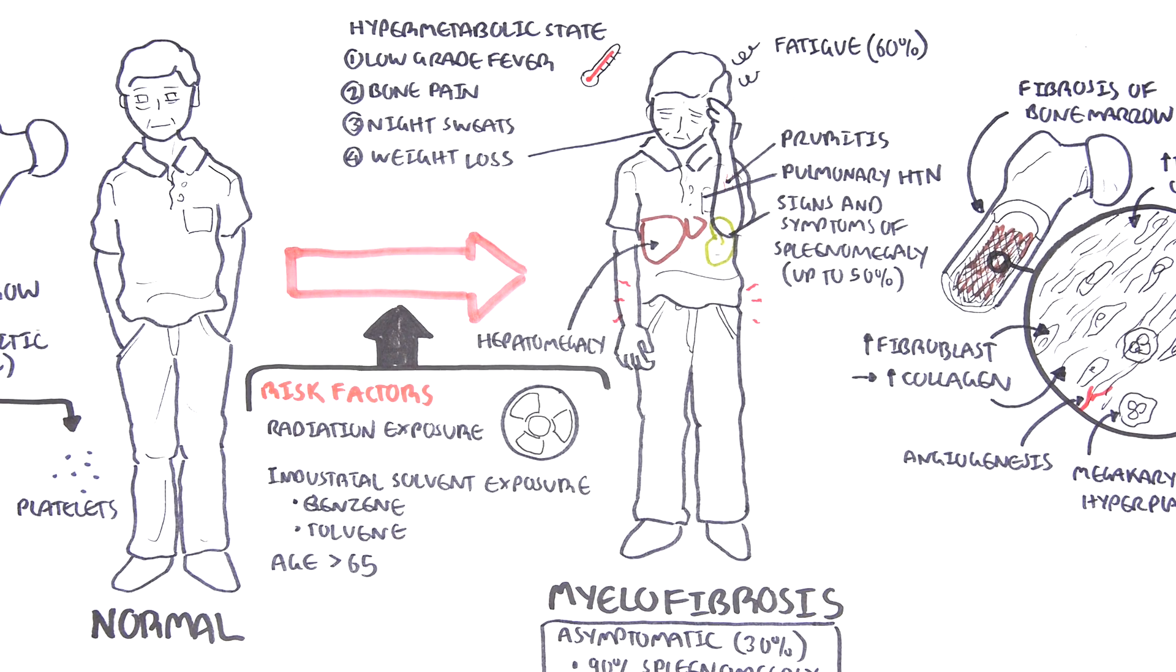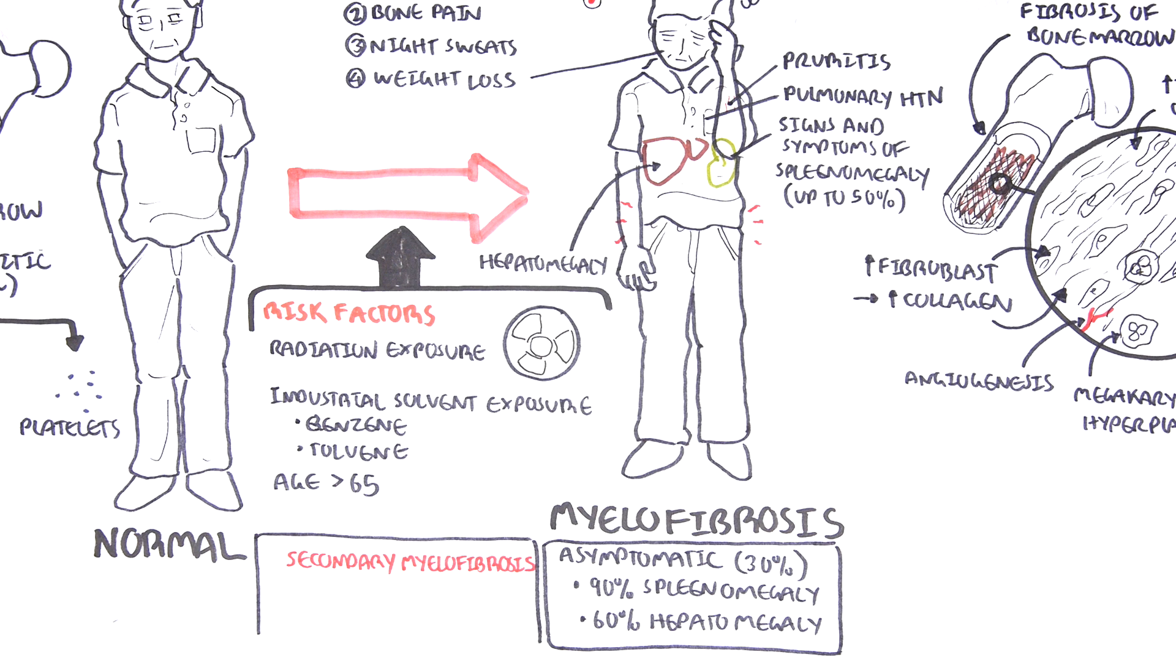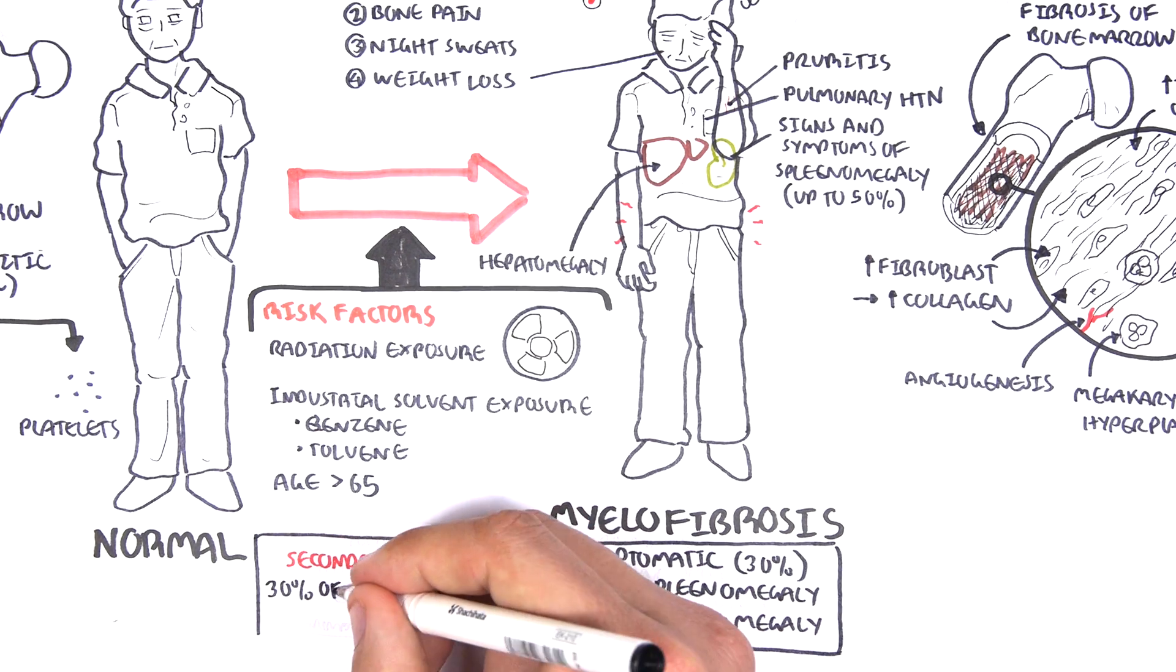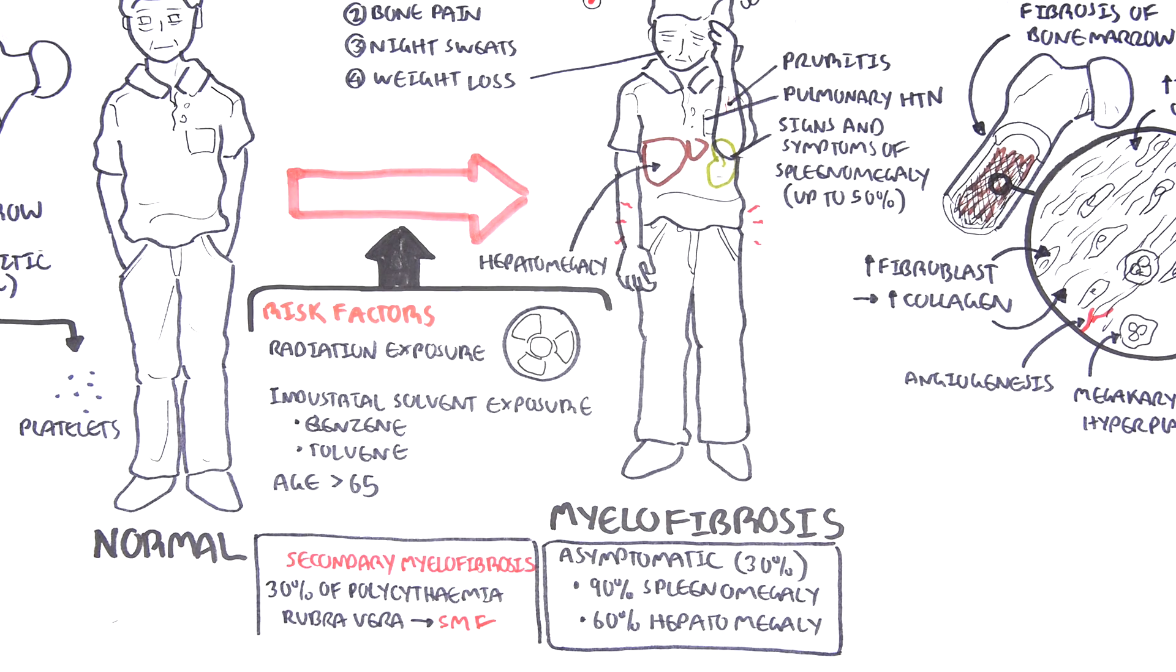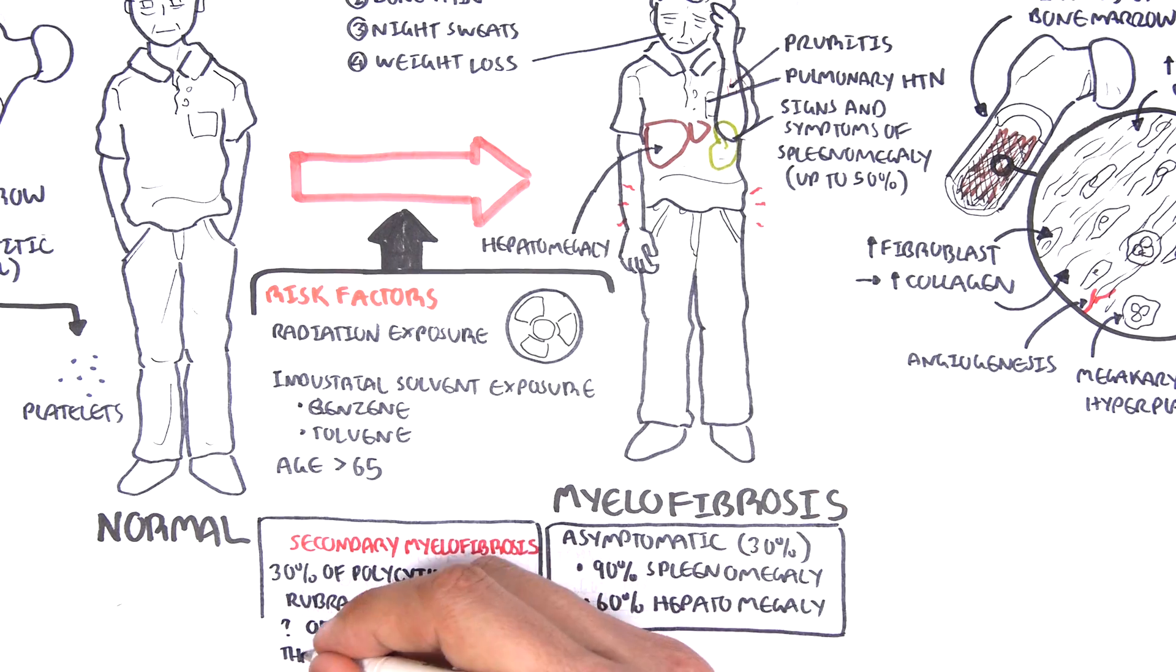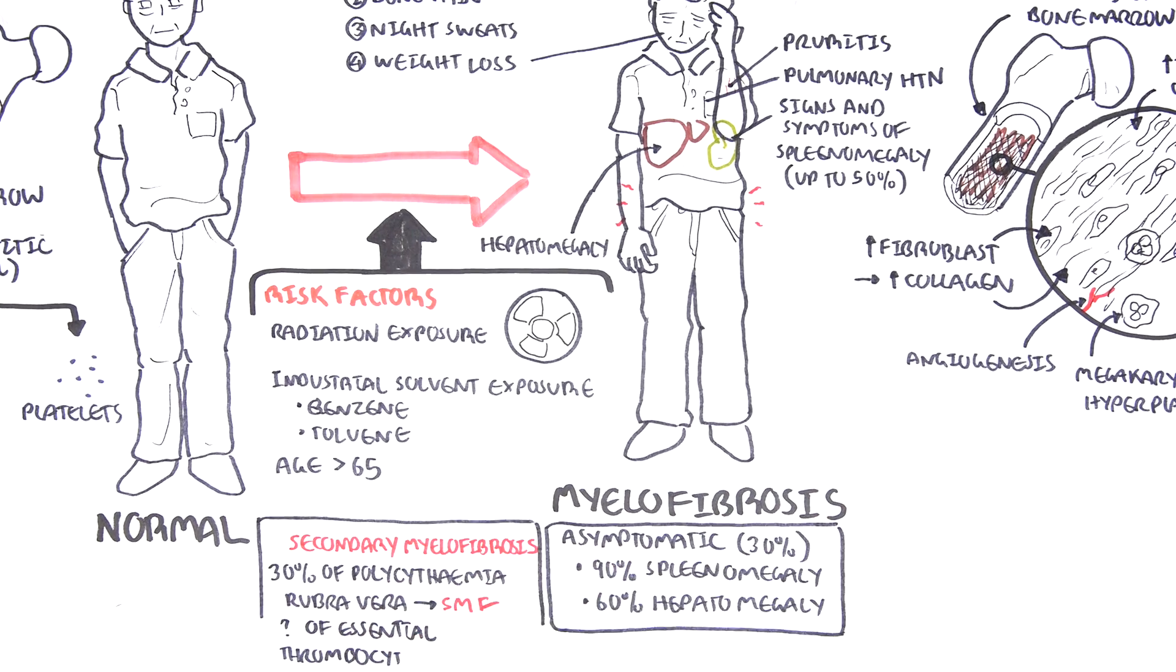Primary myelofibrosis is a disorder on its own. However, there is also secondary myelofibrosis. And secondary myelofibrosis is caused by another disease or disorder. A common cause for secondary myelofibrosis is the other myeloproliferative disorders. 30% of polycythemia rubra vera can lead to secondary myelofibrosis, as well as a high percentage of essential thrombocythemia can also lead to secondary myelofibrosis.